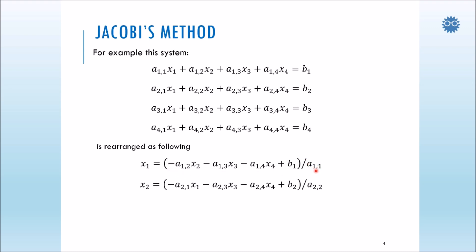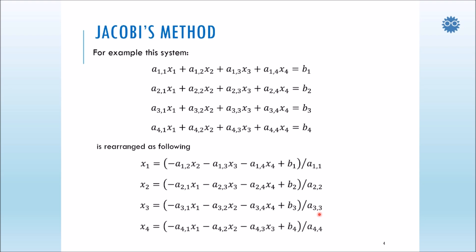For x2, same thing — we take x2 from the second equation, because the first equation gives us the value of x1, and the second equation gives us the value of x2. We take all terms to the right-hand side and divide them by a22, the coefficient of x2. The same thing will be done for x3 from the third equation, dividing the rest of the terms by a33. Finally, the same is done for equation four, with all terms divided by a44.